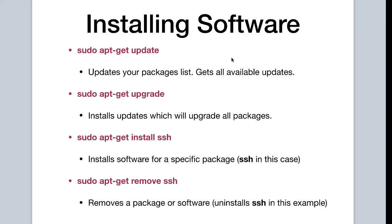When installing software, there is one command we should always run first. That is sudo apt-get update. This updates all our apt-get package index files so that our system is up to date. Essentially, if software or package updates are available, running this command gets them for us.